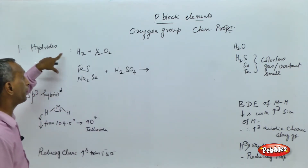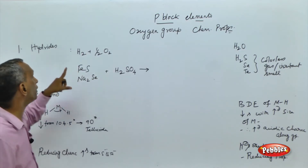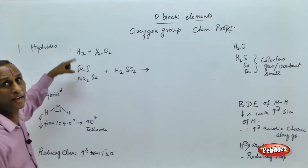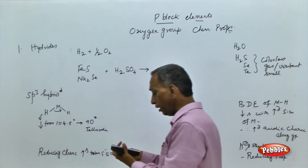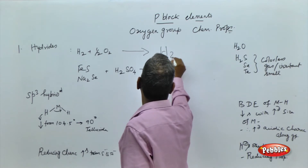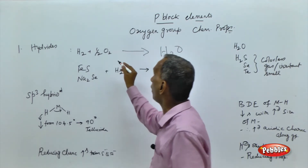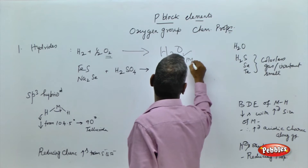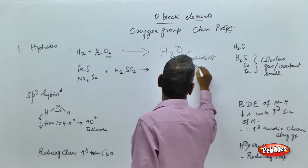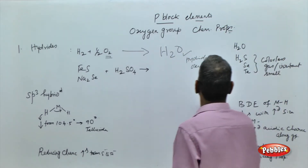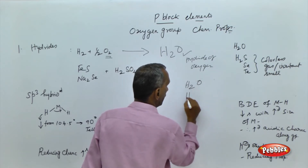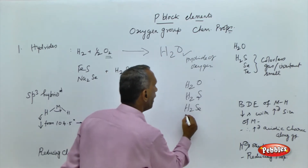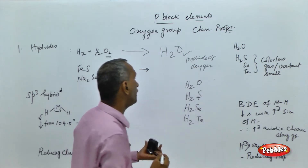Hydrides are generally formed by two methods. One is by direct combination — hydrogen combining with oxygen to form water. H2 + O2 gives water, so water is a hydride of oxygen. Other hydrides of oxygen group elements are H2S (hydrogen sulfide), H2Se (hydrogen selenide), and H2Te (hydrogen telluride). All are hydrides of oxygen group elements.